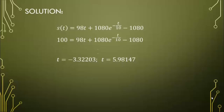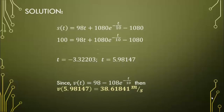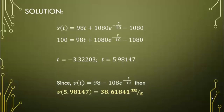The velocity of the object upon hitting the ground is v(5.98147) ≈ 38.61841 meters per second. Thank you.